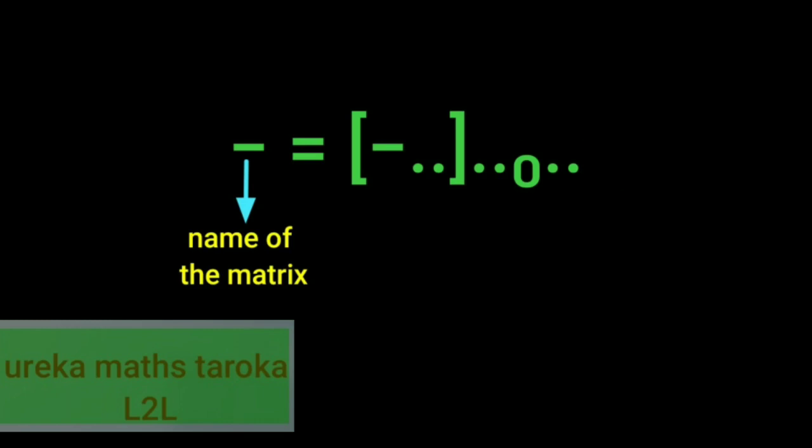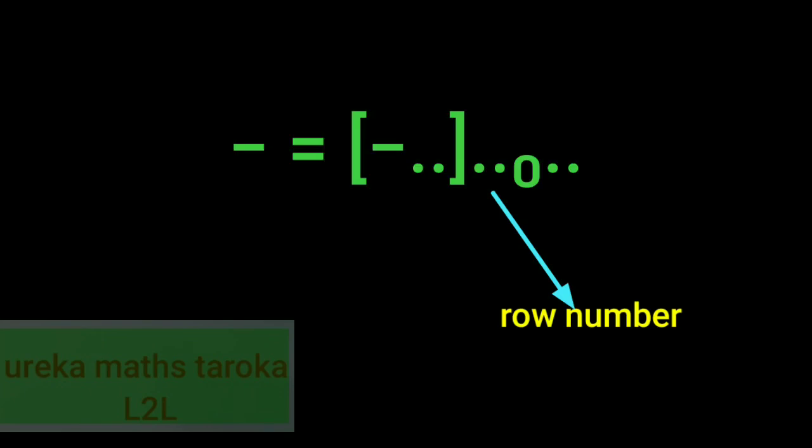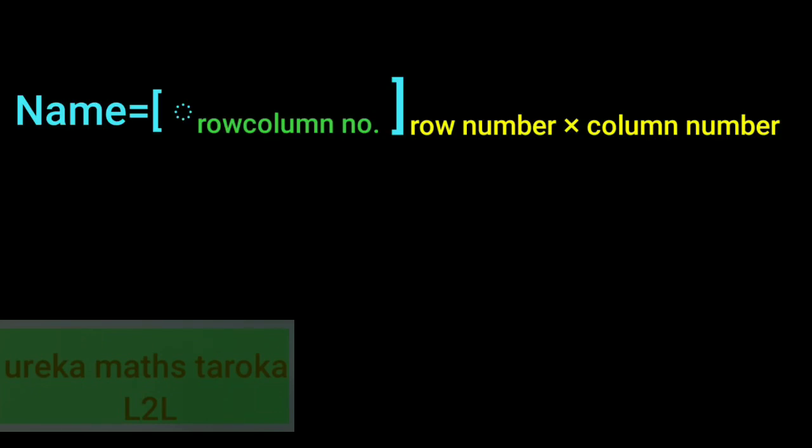Once we look at the entry, the name is row column number, row number and column number. This symbol will represent the matrix. This is the name.